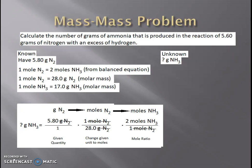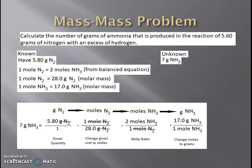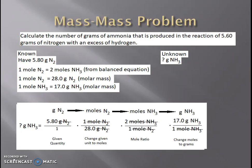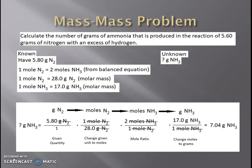That still doesn't match my unknown quantity, so I need one more conversion — changing moles of ammonia into grams of ammonia using the molar mass: 1 mole of ammonia on the bottom and 17 grams of ammonia on top. Moles divided by moles reduces out, leaving me with grams of ammonia, which is the unit I'm trying to find. Now I just multiply the numerators and divide by the denominators, and I find that 7.04 grams of ammonia are produced when 5.6 grams of nitrogen are reacted.